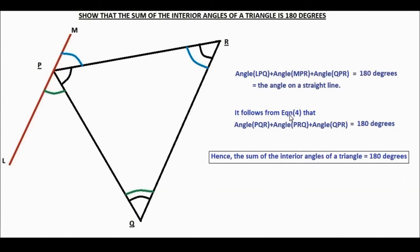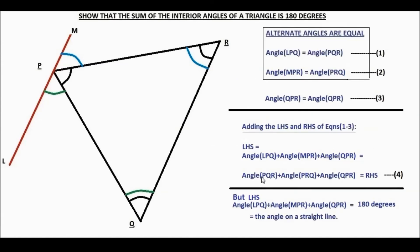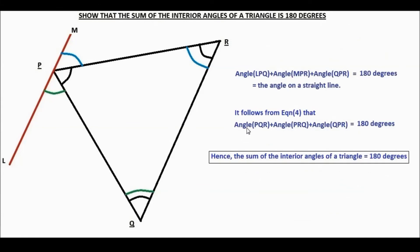It follows from equation 4 that the LHS, which is 180 degrees, must be equal to the RHS, which is the sum of the three interior angles of the triangle: angle PQR plus angle PRQ plus angle QPR. Therefore, angle PQR plus angle PRQ plus angle QPR equals 180 degrees. So the sum of the interior angles of a triangle is 180 degrees.